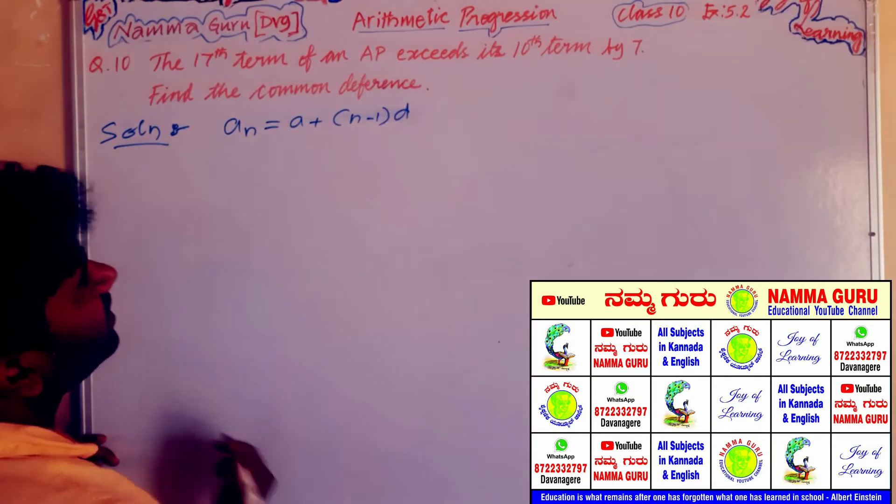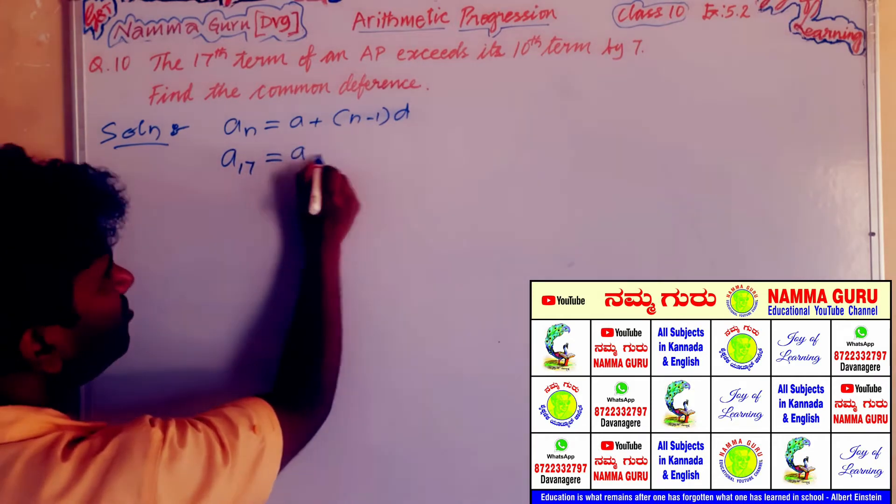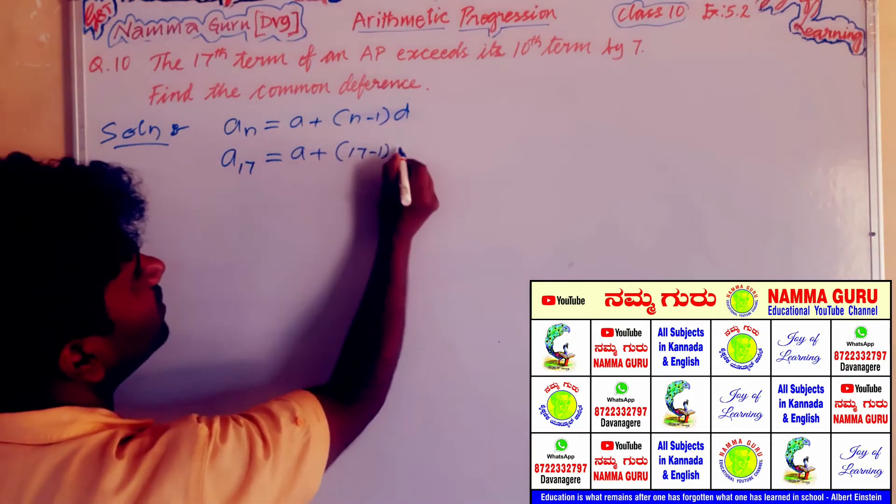The 17th term of an AP, a_17, is equal to a plus (n is 17) minus 1 into d.